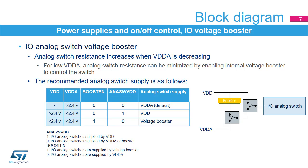The analog switch inside the I/O has a resistance which increases when the analog switch supply decreases. So, for cases where VDDA and VDD are low, there is a possibility to enable a voltage booster, which will supply the analog switch and guarantee low resistance. The recommended supply for the analog switch is to use VDDA. But when VDDA is lower than 2.4 volts and VDD is larger than 2.4 volts, the power supply can be switched to VDD. If both VDDA and VDD are lower than 2.4 volts, the voltage booster should be enabled.